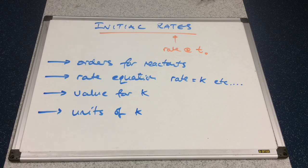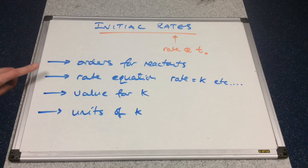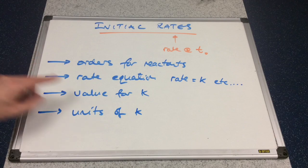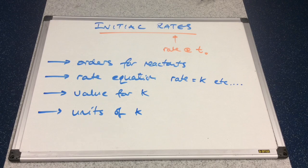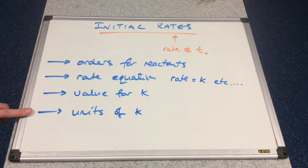The things we can generate from the initial rates method: we can work out the orders for all the reactants. Once we know the orders we can generate the rate equation — rate equals k, etc. Once we know the rate equation and have data for the rate and concentrations, we can calculate the value for k, the rate constant, and also calculate the units for k.